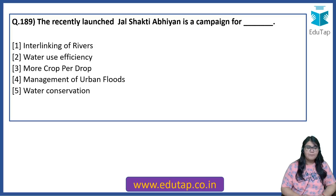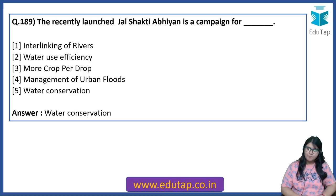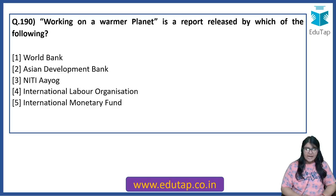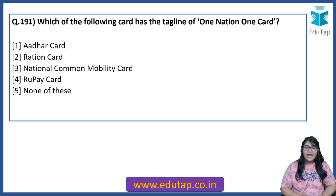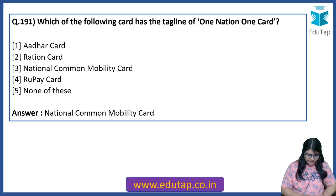The recently launched Jal Shakti Abhiyan is a campaign for water conservation. 'Working on a Warmer Planet' is a report released by the International Labour Organization (ILO). Which of the following cards has a tagline 'One Nation, One Card'? The correct answer is the National Common Mobility Card.